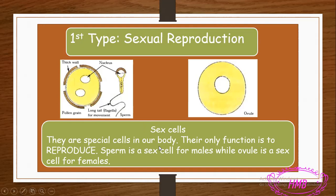Sex cells determine whether a living thing is male or female. A living thing having sperm means it is male; having ovules means it is female. Sex cells are special cells whose only function is reproduction — one job, which is making new living things. Sperm is the sex cell for males; the ovule is the sex cell for females.